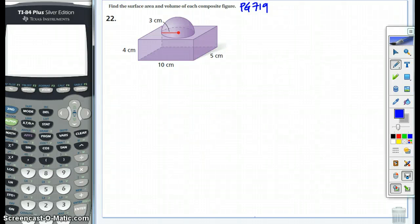Hello, once again. We're going to go over two problems from the classwork on page 719. The first problem is 22, and you can see that it's made up of a hemisphere and a rectangular prism. So let's go find the volume. The volume is going to be made up of the hemisphere and the rectangular prism.